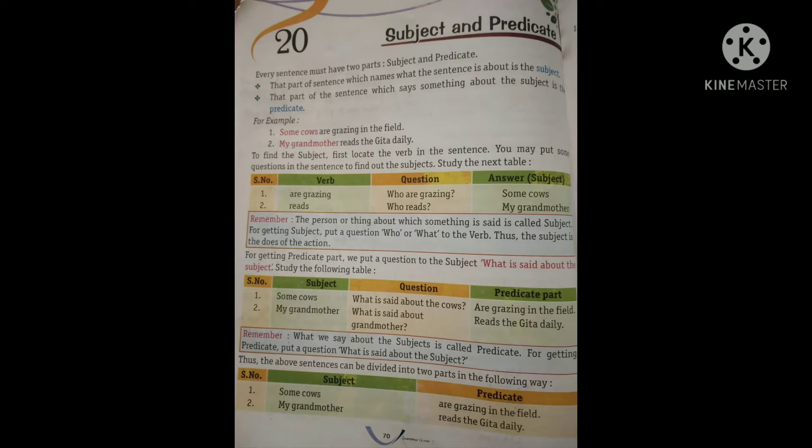And the predicate is rest of the part of the sentence. For example, some cows are grazing in the field. Some cows - cows ke baare mein sentence hai, toh some cows hua subject. Are grazing in the field hua predicate.